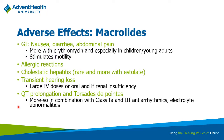Adverse effects of macrolides: GI side effects tend to be worse than other antibiotics because they interact with the motilin receptor, increasing peristalsis and causing cramping and diarrhea. This can actually be used therapeutically — erythromycin is prescribed at the children's hospital for patients with disrupted GI motility, not infections. Occasionally there's cholestatic hepatitis. With renal insufficiency or large IV doses, transient hearing loss can occur. The big one to focus on is QT prolongation.